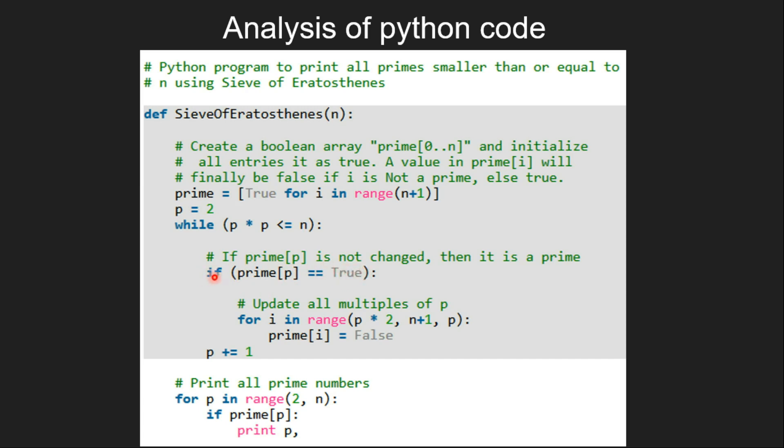That is, if prime p is equal to true, then we run a for loop. And inside the for loop, we update all the multiples of p,